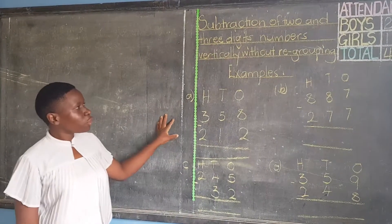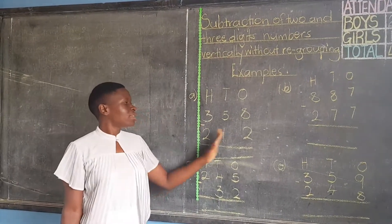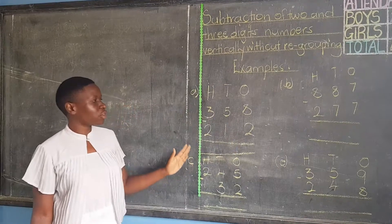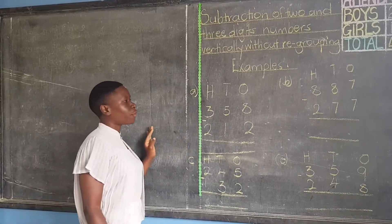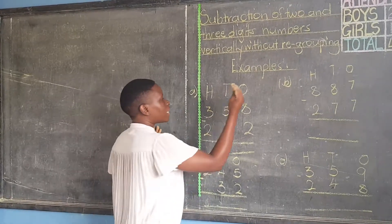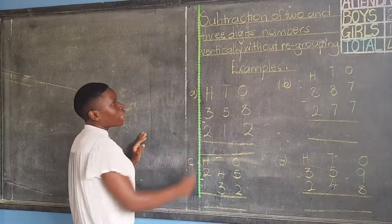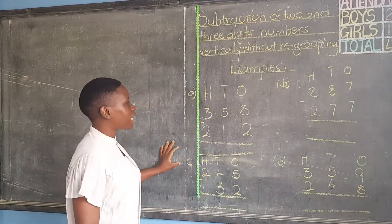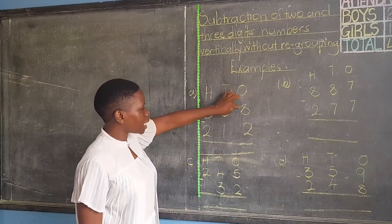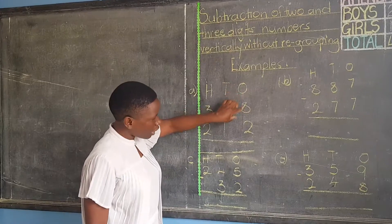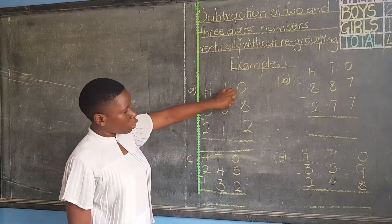Meaning, we are not going to borrow. It's a matter of subtracting. In subtraction, we are supposed to begin from our right-hand side coming to left. You are going to subtract the number down from that one on top.